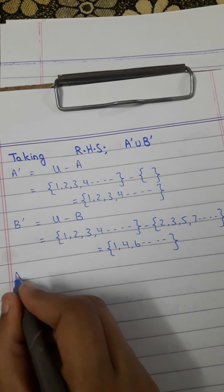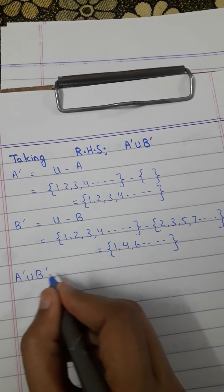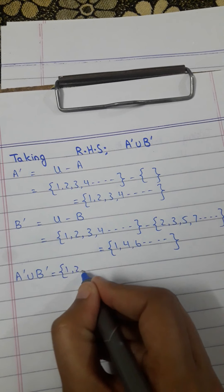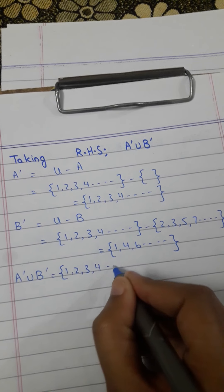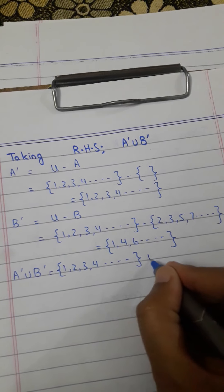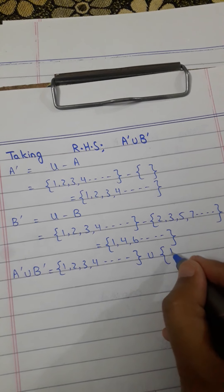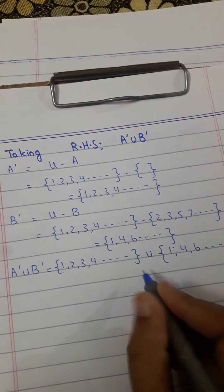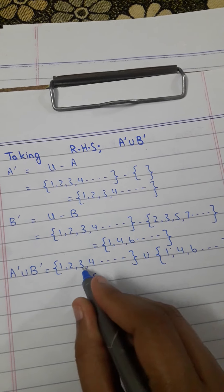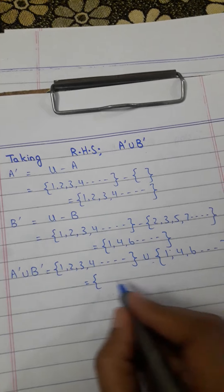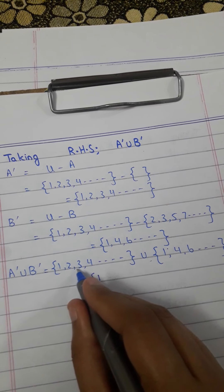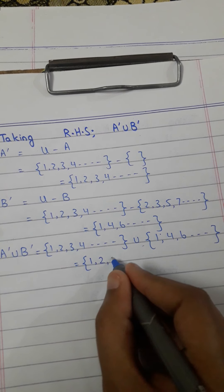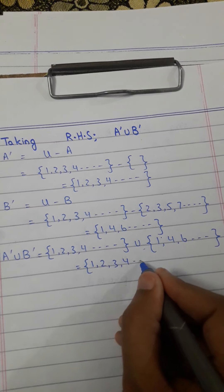Now compute A'∪B'. Write the answer of A', which is {1, 2, 3, 4, ...}, union B' which is {1, 4, 6, ...}. As you know, in the union we combine all terms — those present in set 1 and set 2. The result is {1, 2, 3, 4, ...} and so on.